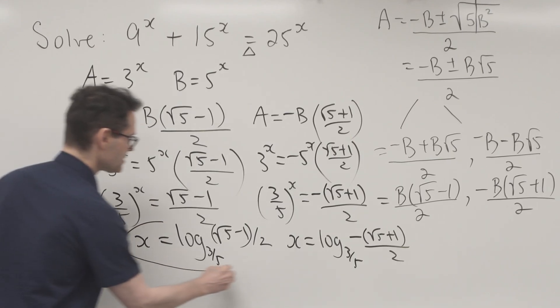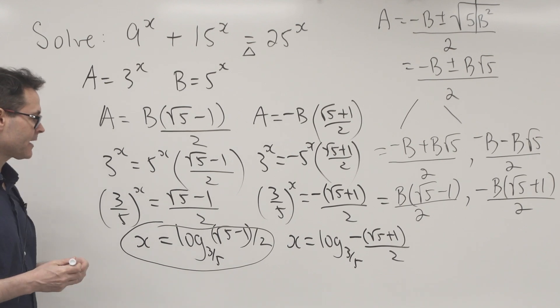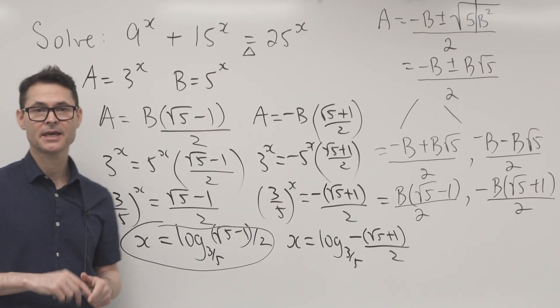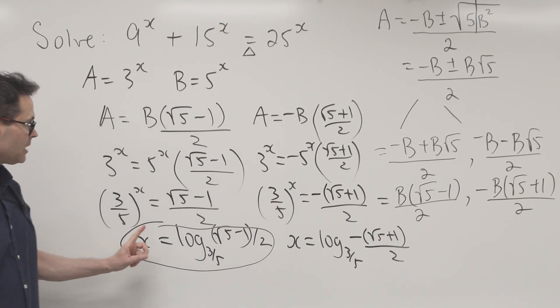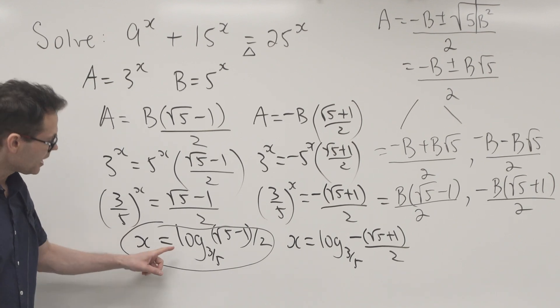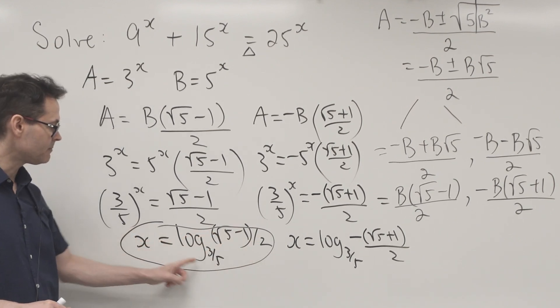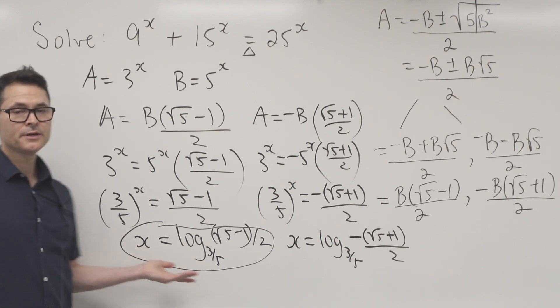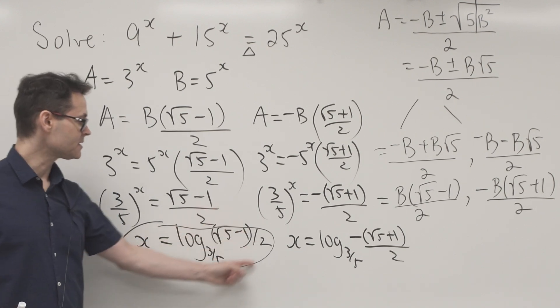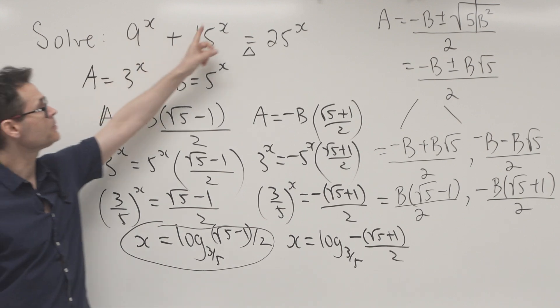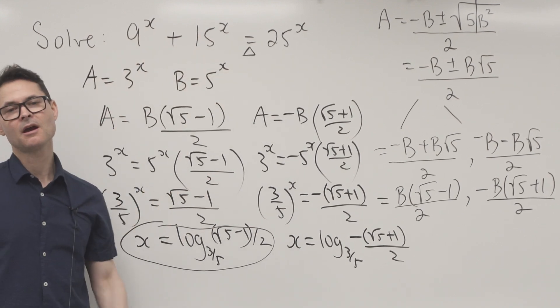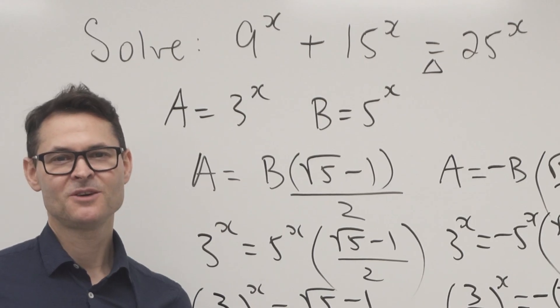The only answer is x = log₍₃/₅₎[(√5 - 1) / 2]. This can be typed into a calculator using change of base: log(argument) / log(base). If you plug this back into the original equation, it creates balance. See you in the next video.